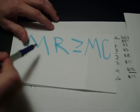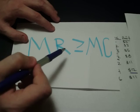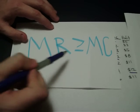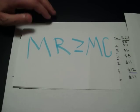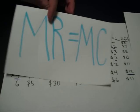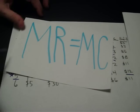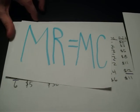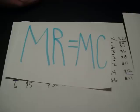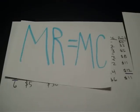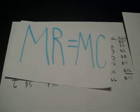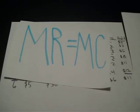So again, the rule that we're following: as long as marginal revenue is greater than or equal to marginal cost, we'll still produce. On the graph, you want to look for the point where marginal revenue equals marginal cost. This is where we find the optimal quantity and the price that the business should be producing at.